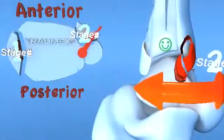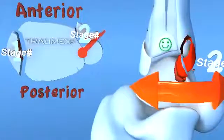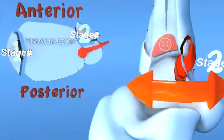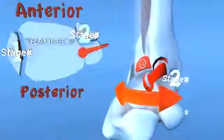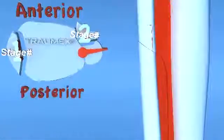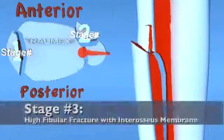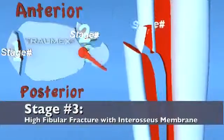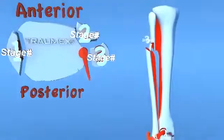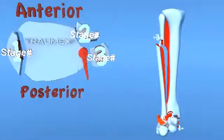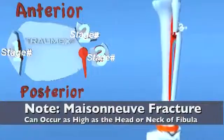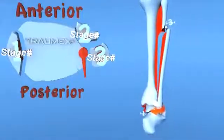As the forces continue past stage 2, rupture of the interosseous membrane begins to occur distally at the level of the ankle joint. The exit point of this rupture creates a stage 3 injury, described as a high short oblique fracture of the fibula beginning above the level of the syndesmosis. This fracture can be at various levels of the fibula. The most proximal fracture pattern occurs at the head and neck of the fibula, which is described as a Maisonneuve fracture.